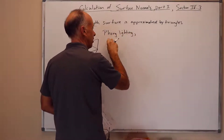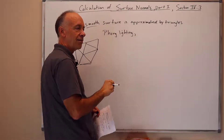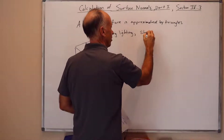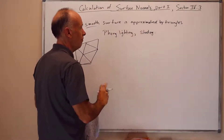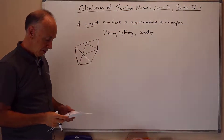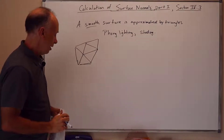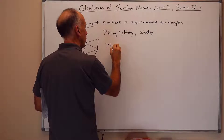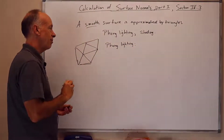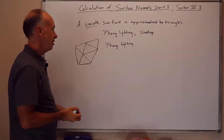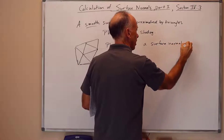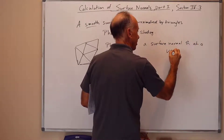Phong lighting is a way of computing lighting based on quasi-physical based lighting methods, and shading means averaging colors smoothly across the surface. You can find the material on surface normals discussed in this lecture in section 4.3. For Phong lighting, it needs a lot of things: material properties, light properties, vertex positions, viewer position, but it also needs a surface normal at a vertex on the surface.